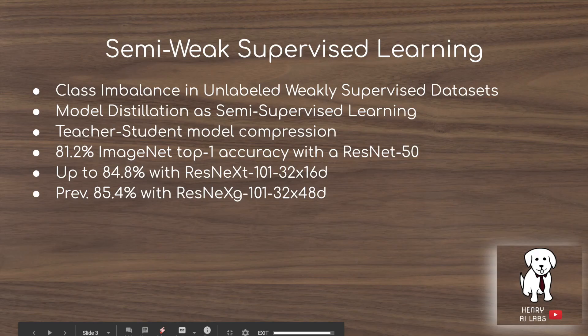The research paper raises the issue of class imbalance in unlabeled or weakly supervised datasets. Class imbalance can really hurt performance — for example, if 80% of your training data is cats and 20% is dogs, your model will be biased toward cats. With weakly supervised datasets like Instagram hashtags, there will be a long-tail distribution where really specific ImageNet classes are underrepresented compared to common ones.